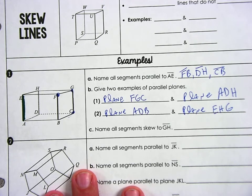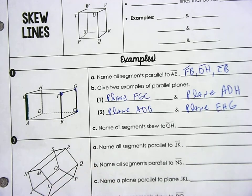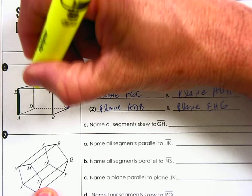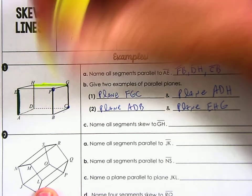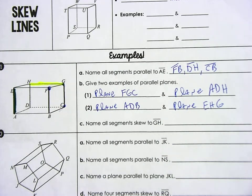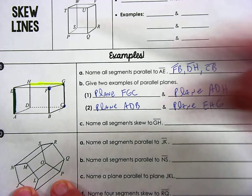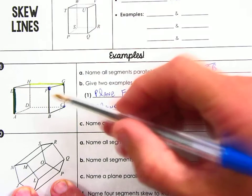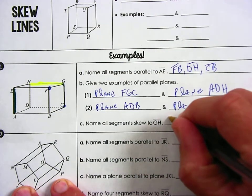All right, name all segments skew to GH. So I'm going to take a highlighter for this one. All right, move that baby over. I'm going to highlight GH right here. All right, so I want skew. So I want it to not touch GH, but I also don't want the line to be in the same plane. So see how GH is going left to right? Look, FB is in the front. It's going north-south. So definitely FB.